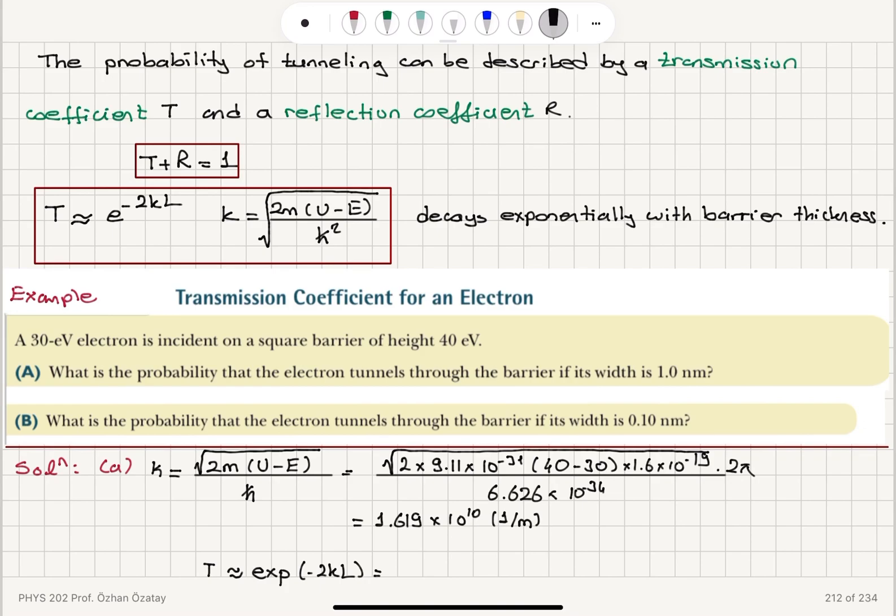If I substitute the numbers, it's the exponential of minus 2 times 1.619 times 10 to the 10, times the width of the barrier in part A, which is 1 nanometer or 1 times 10 to the minus 9 meters. This gives us a transmission coefficient of 8.66 times 10 to the minus 15.